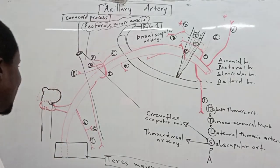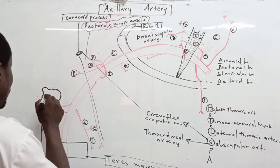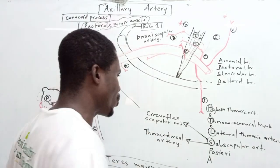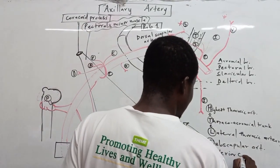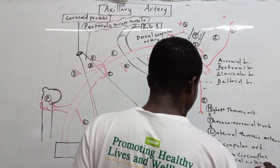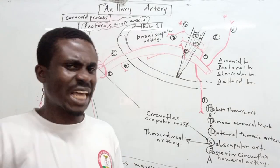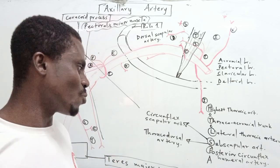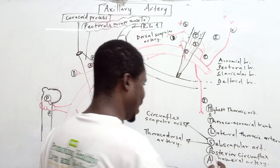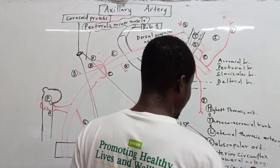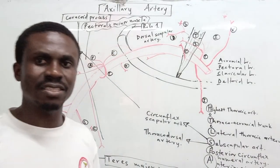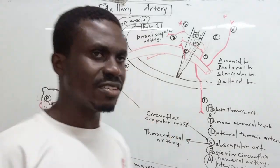The P in SPA is the posterior circumflex humeral artery, winding posteriorly around the surgical neck of the humerus. The A is the anterior circumflex humeral artery, running anteriorly around the surgical neck. So the subscapular artery gives the circumflex scapular and thoracodorsal branches, while the other two branches of the third part wind around the humerus — anteriorly and posteriorly.